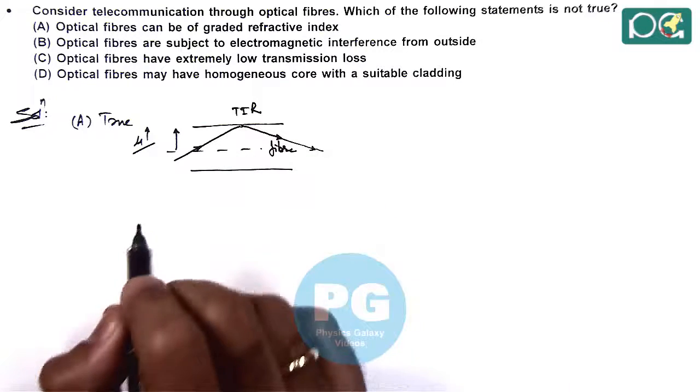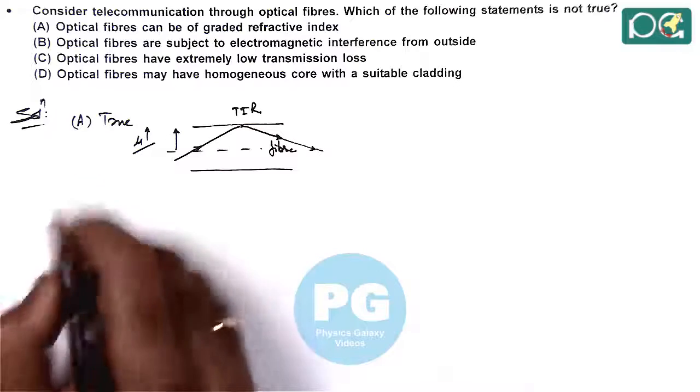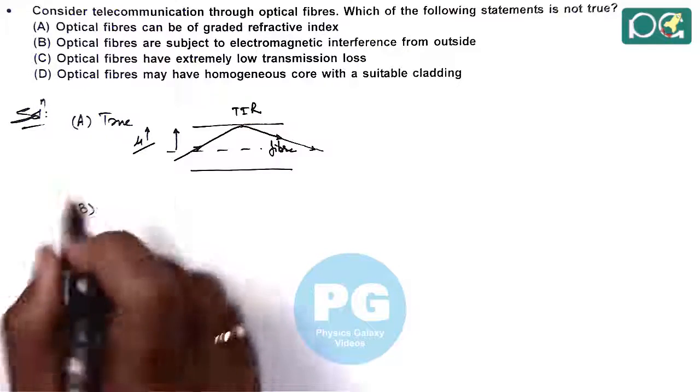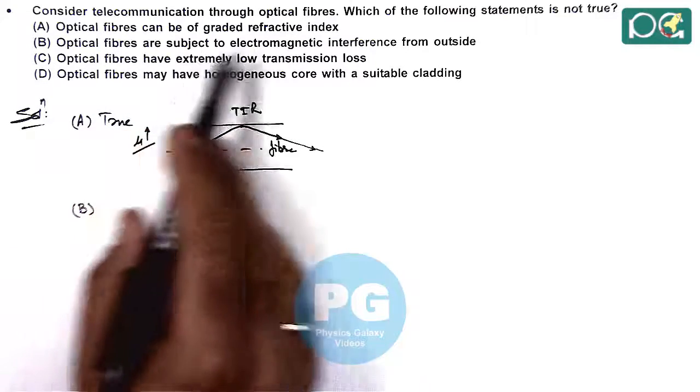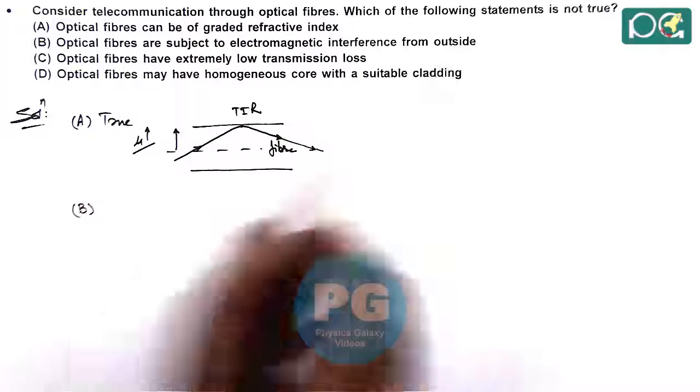If we just have a look on option B which says optical fiber are subject to electromagnetic interference from outside.